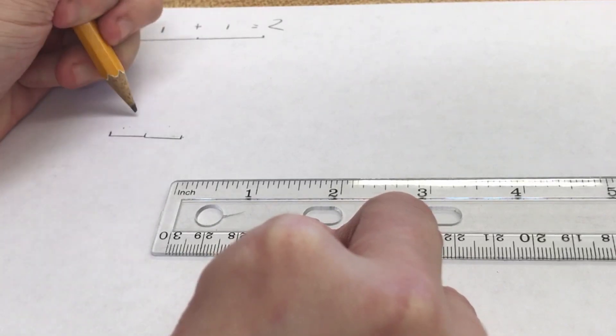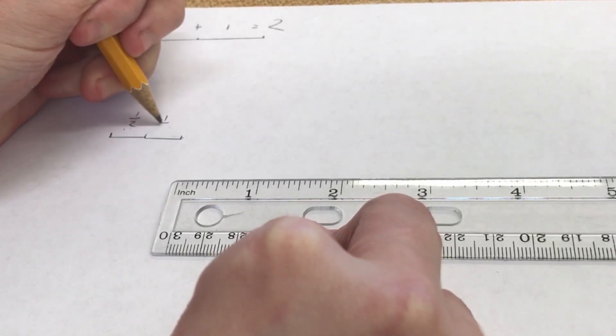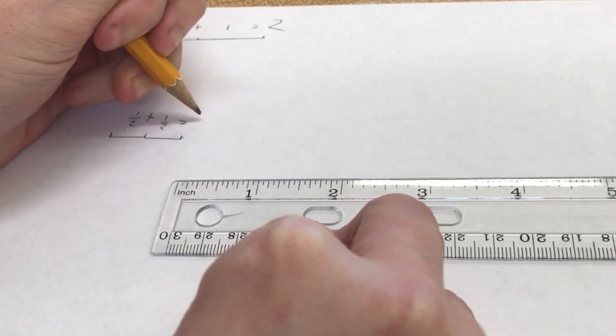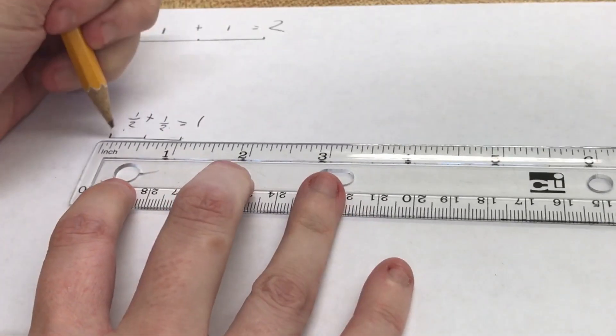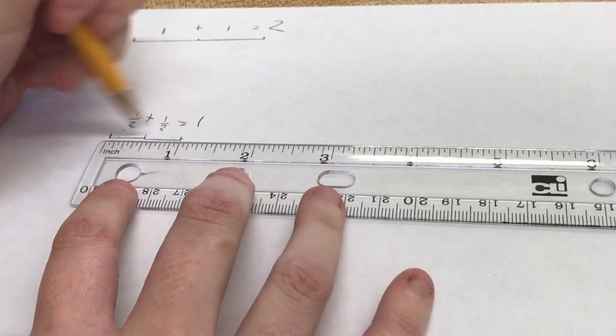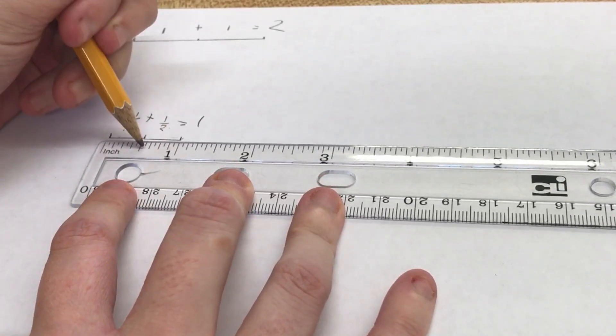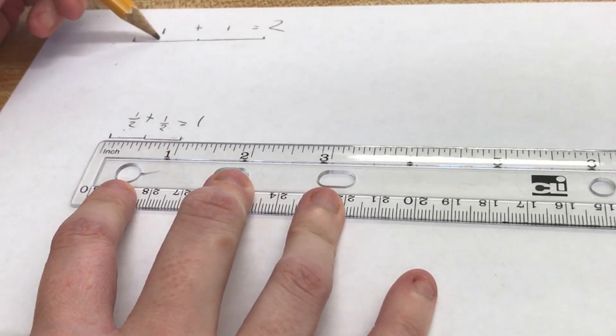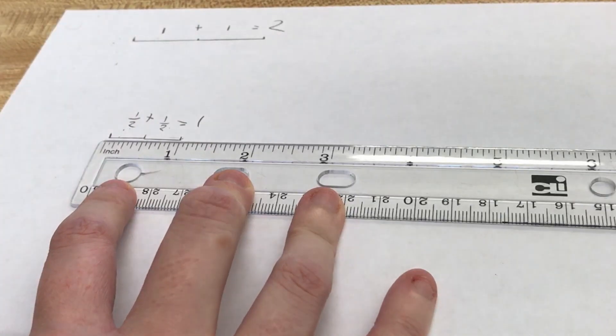Two halves of an inch, half, half, equals a whole. Half here, half there. That's why it's important not to skip this whole area. It means that you're skipping an entire inch if you don't start from the zero.